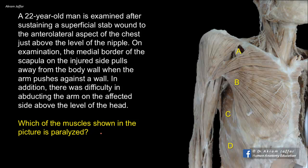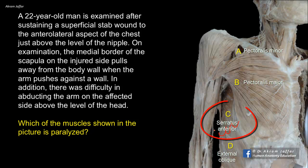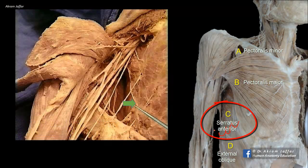First let's identify the muscles. A is pectoralis minor lying underneath B, which is pectoralis major. C, located on the lateral side of the chest with digitations, is serratus anterior. Its digitations interdigitate with the digitations of D, which is the external oblique muscle of the abdomen. At the location of the injury on the anterolateral aspect of the chest, the nerve most likely injured is the long thoracic nerve, which supplies serratus anterior muscle. We will see the nerve in other specimens on the surface of serratus anterior just behind the mid-axillary line.